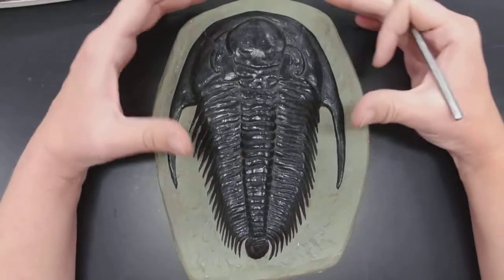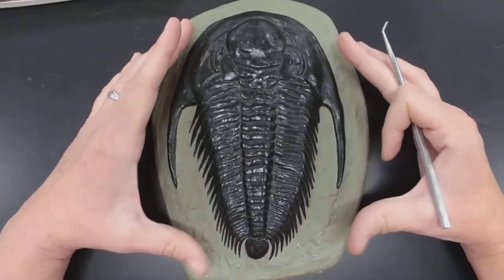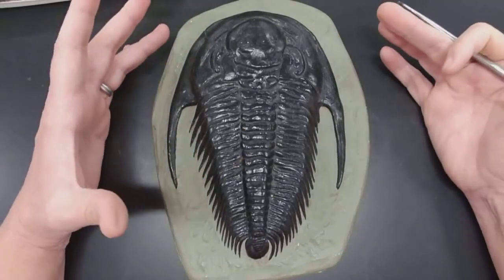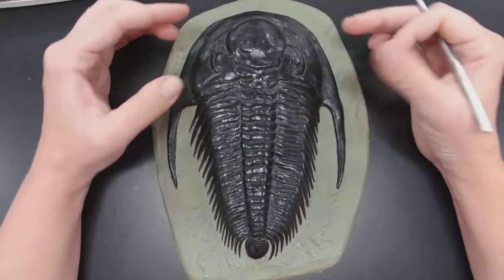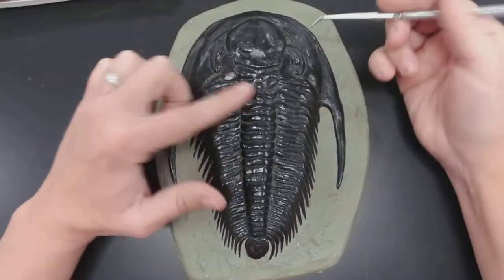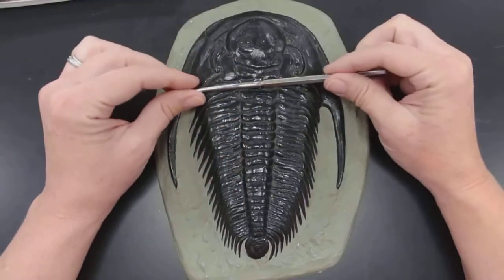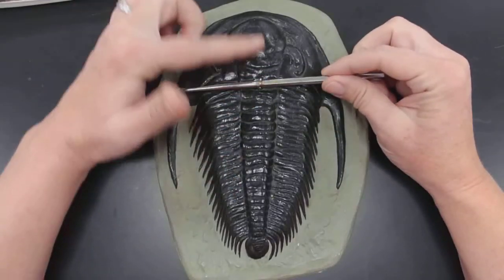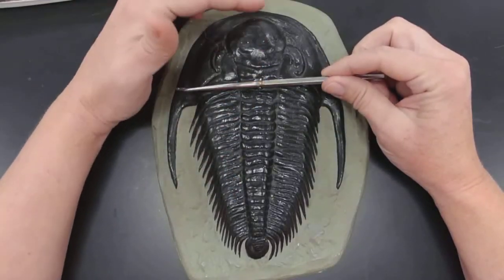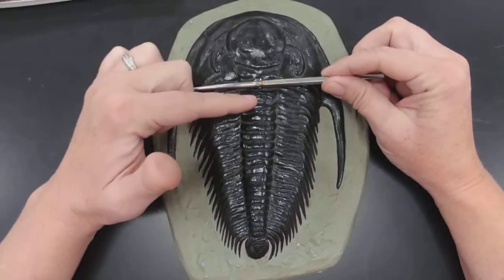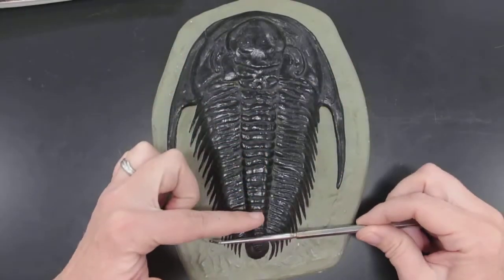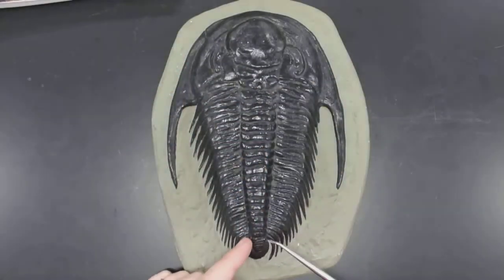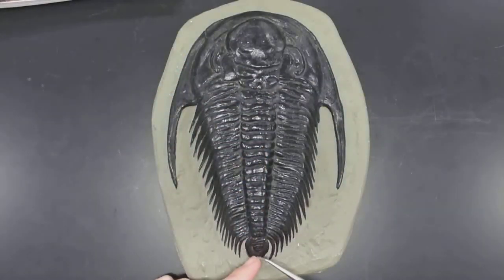These specimens show tagmatization, meaning that we have a definite head. This part here is the head, and then the thorax, and then this little part here is the tail.